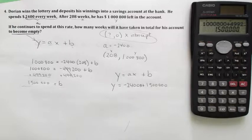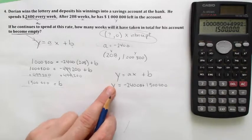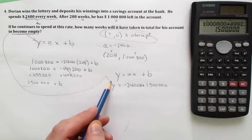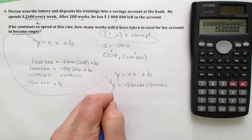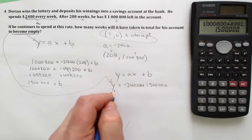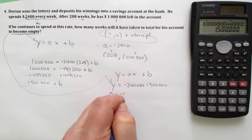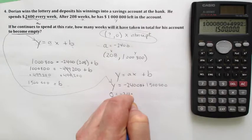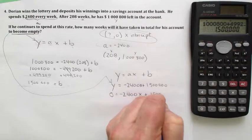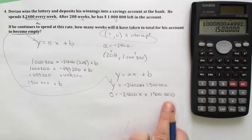And we want to know what happens when his account becomes empty—in other words, when the Y is zero. When the Y is zero, how many weeks have to go by for him to be broke? So we put that zero in for the Y, we copy out the rest of the equation, and now we're going to solve for x.